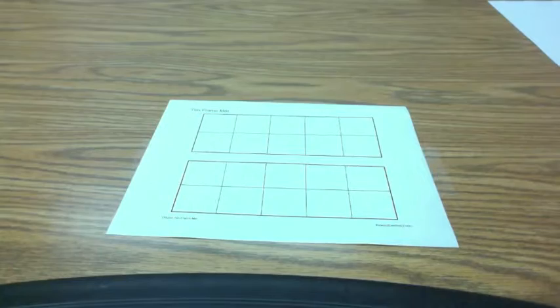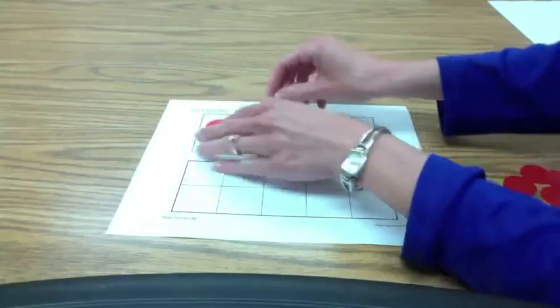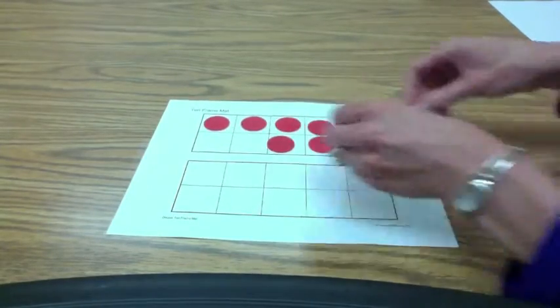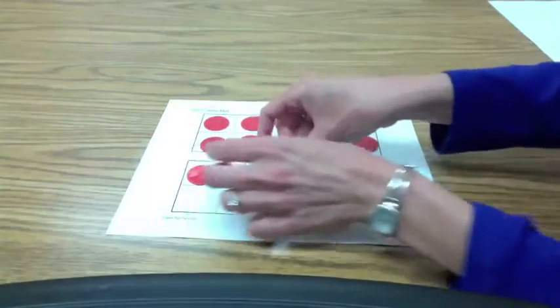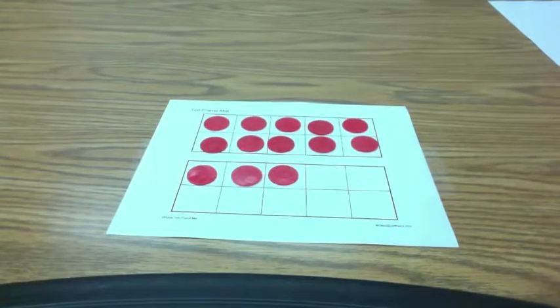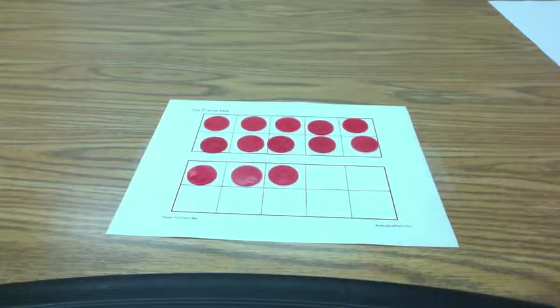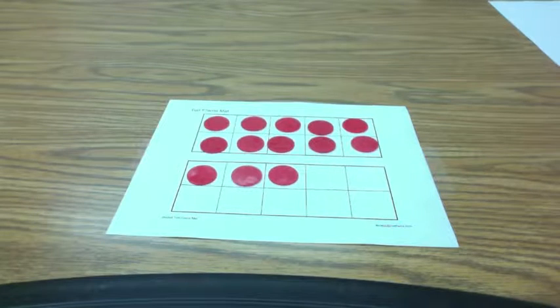First is that they're going to need to understand 10 plus, and what that means is that if they see the whole top 10 frame is filled like this, they will just automatically know, for example, that 10 and 3 is 13, or 10 and 8 is 18, or 10 and 6 is 16. That's something that they're going to need to know to be able to use this tool without counting on their fingers.